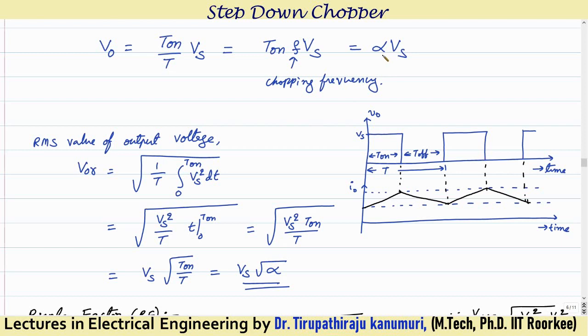Why only pulse width modulation is used — that is, only the duration T-on is changed while total time T and frequency remain fixed — was discussed in the last class, so I am skipping it for now. If anyone has a doubt, you can refer to my last lecture.